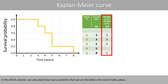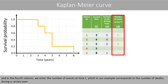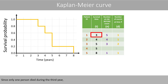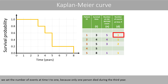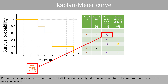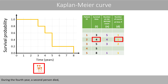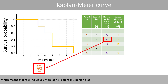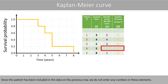In the third column, we calculate how many patients are at risk before the event takes place. In the fourth column, we enter the number of events at time t, which in our example corresponds to the number of deaths during a certain year. Since only one person died during the third year, we set the number of events at time t to one. Before the first person died, there were five individuals in the study, so five individuals were at risk. During the fourth year, a second person died, meaning four individuals were at risk before this person died.